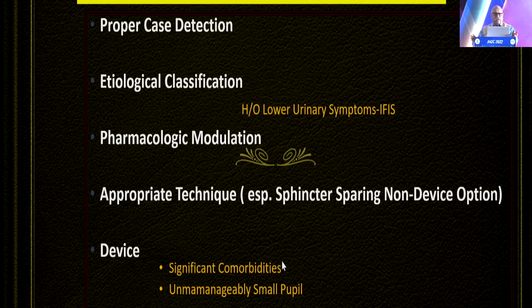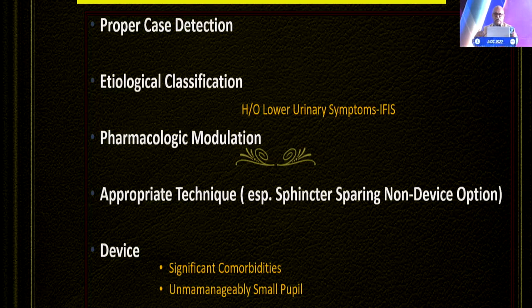You must be able to detect cases properly and have an aetiological classification so that you can make a proper strategy. Pharmacological modulation works in mild to moderate cases, and in very severe cases where you expect a lot of intraoperative issues, one should use a device. The surgery has to be performed very carefully following the guidelines discussed in this presentation. Thank you so much for your attention.